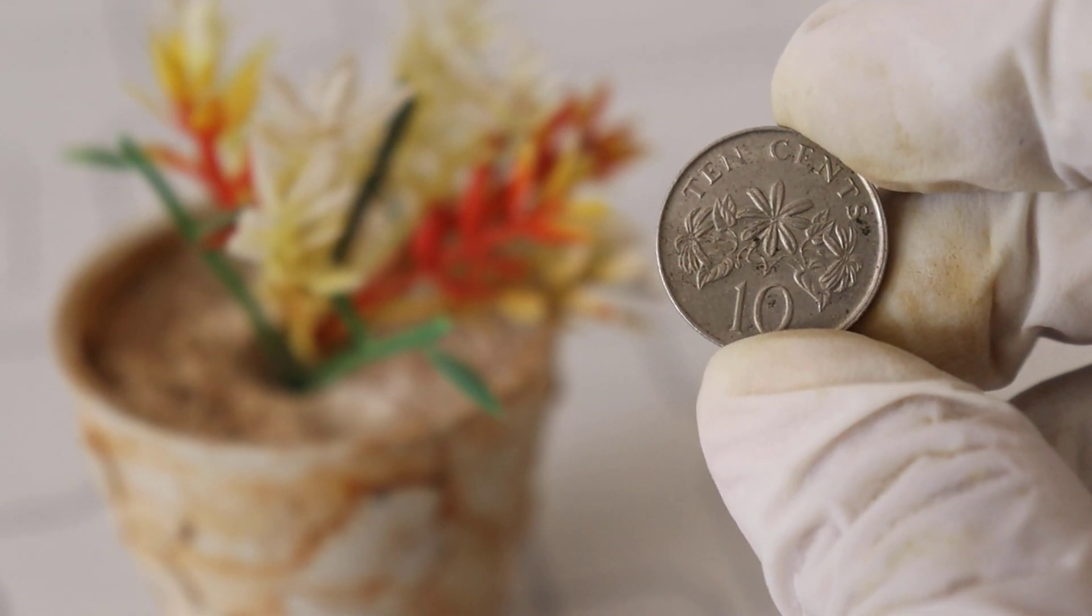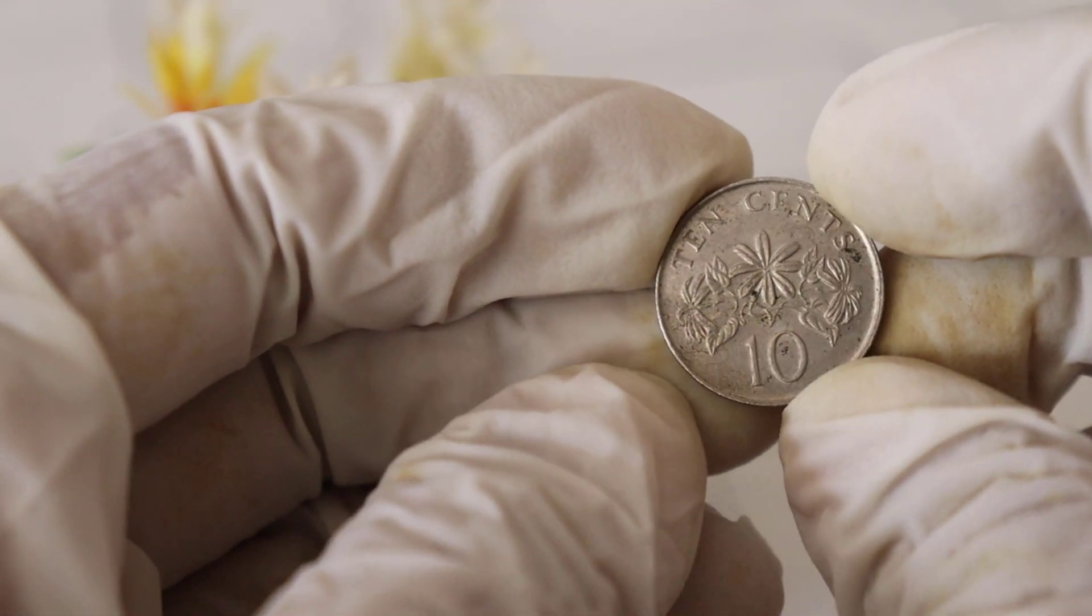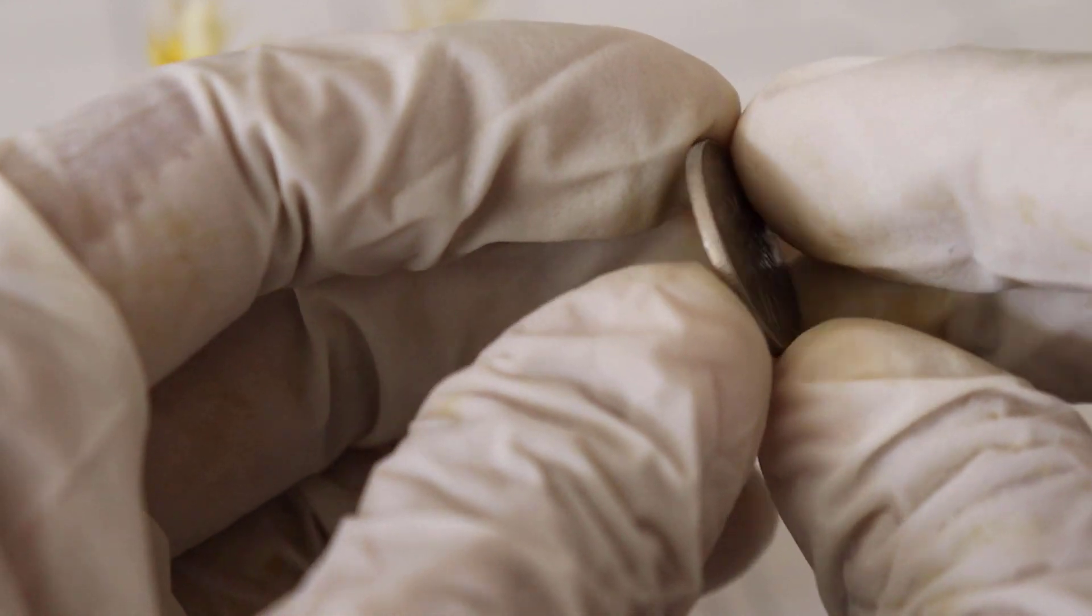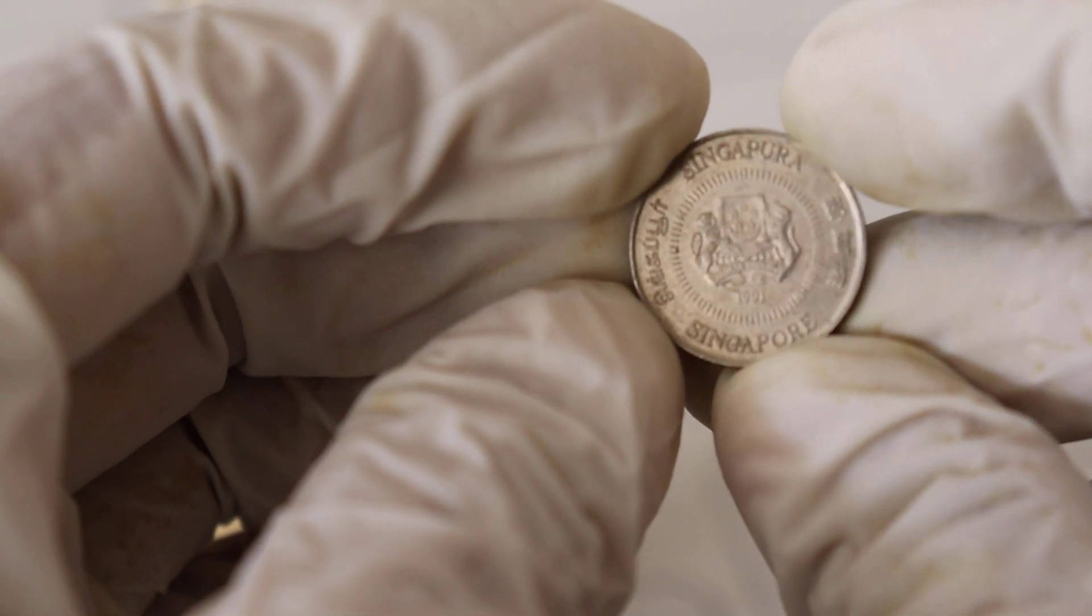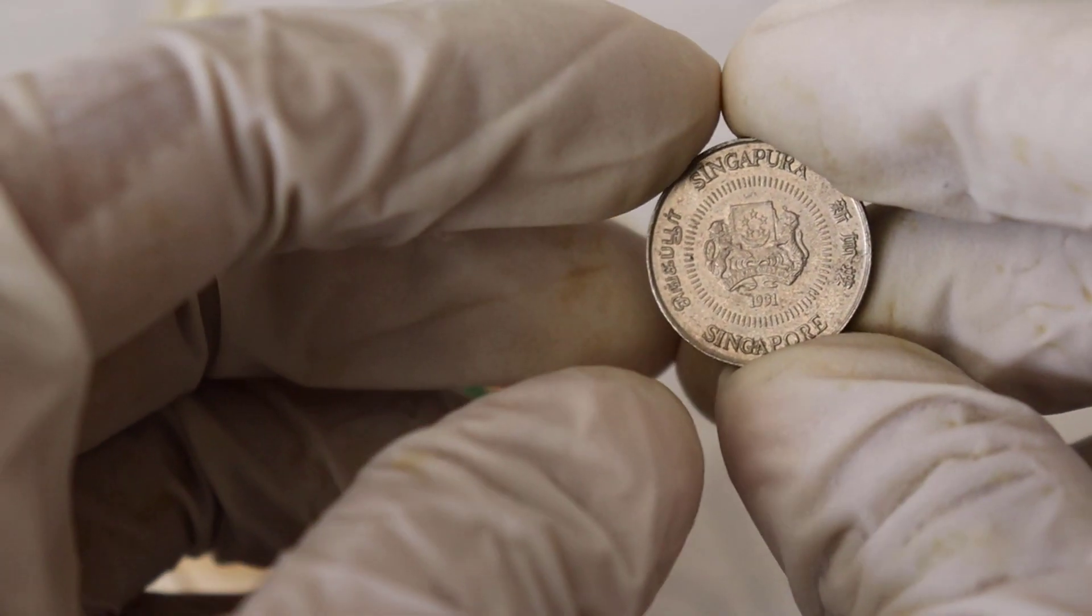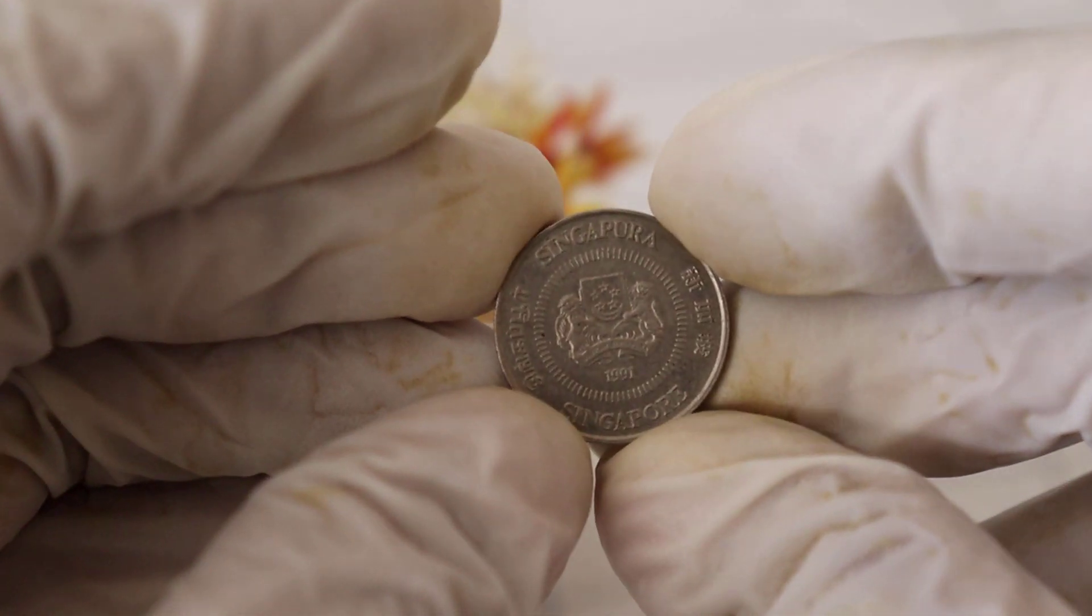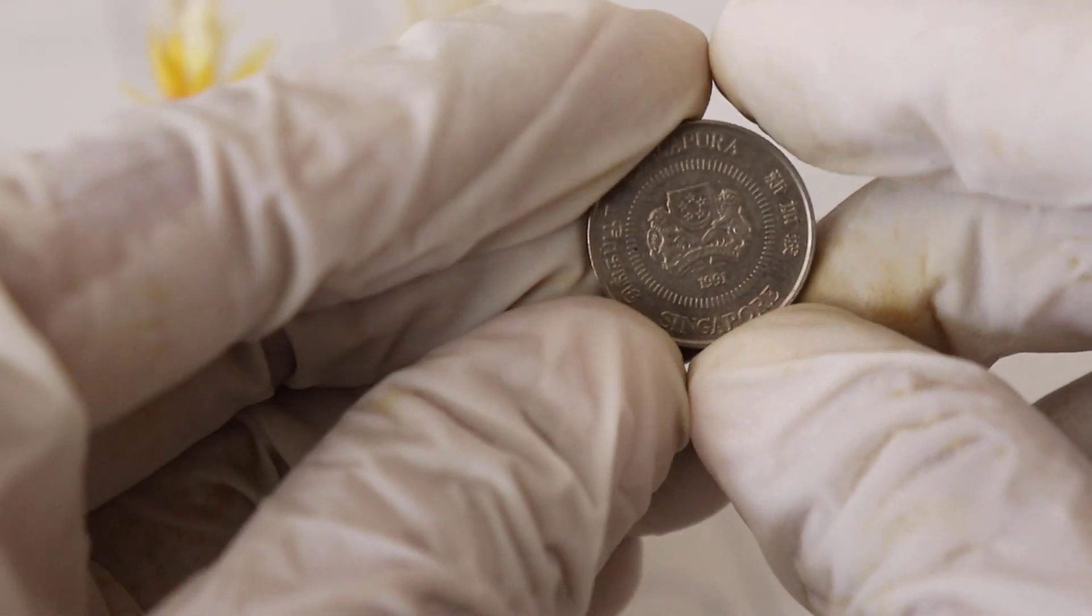As of my last update in September 2021, a standard 1991 Singapore Ten-cent coin in average circulated condition could be worth around 50 cents to a dollar. However, if you have a coin in near-mint or uncirculated condition, or one with special attributes, its value could be substantially higher.